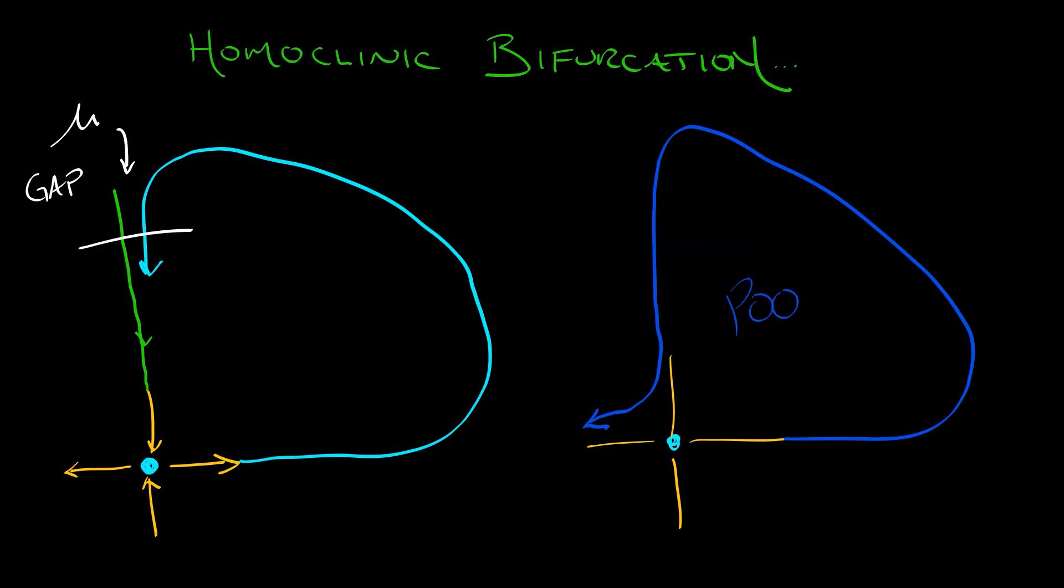You go out that unstable direction, come in along the stable direction, but you're sent, poof, into a different place altogether. That's what a homoclinic bifurcation looks like. You have this limit cycle, and its period gets longer and longer and longer, bigger and bigger, and then it's like it's infinite, and then it's gone. That's a homoclinic bifurcation.